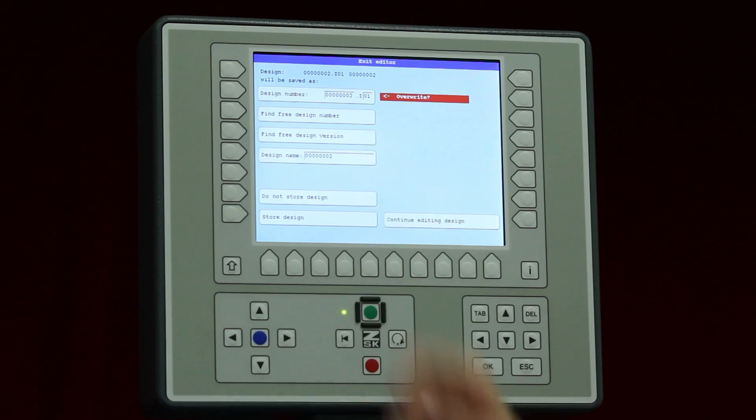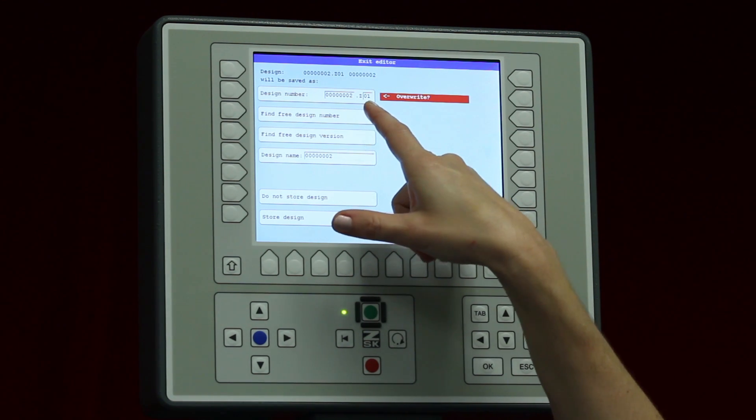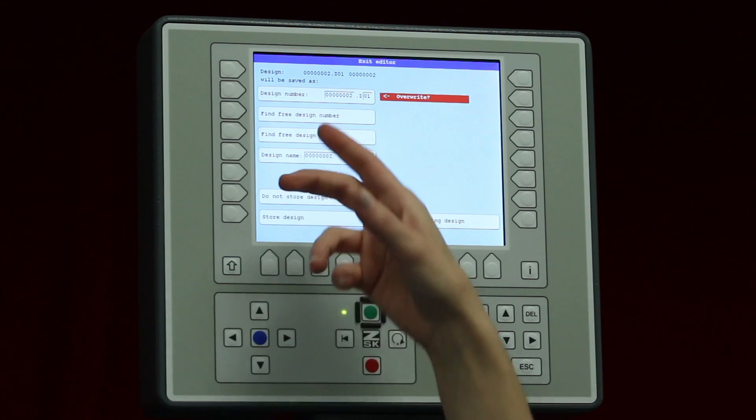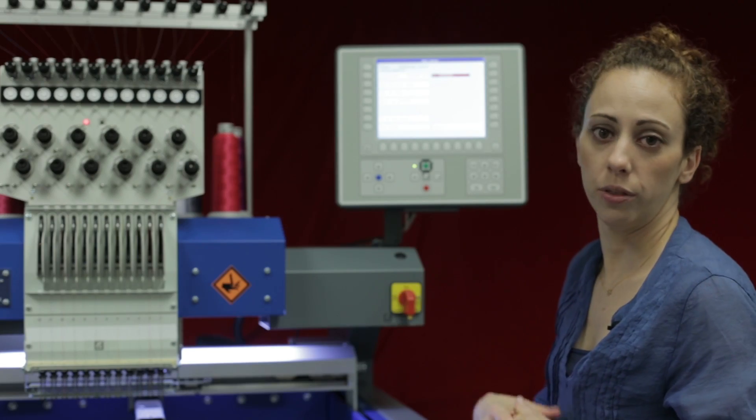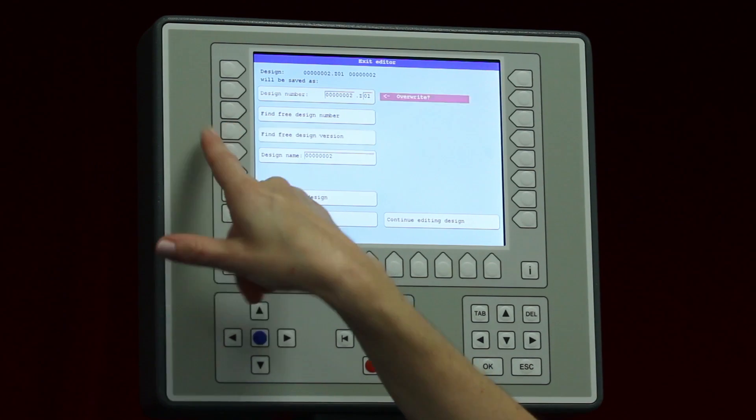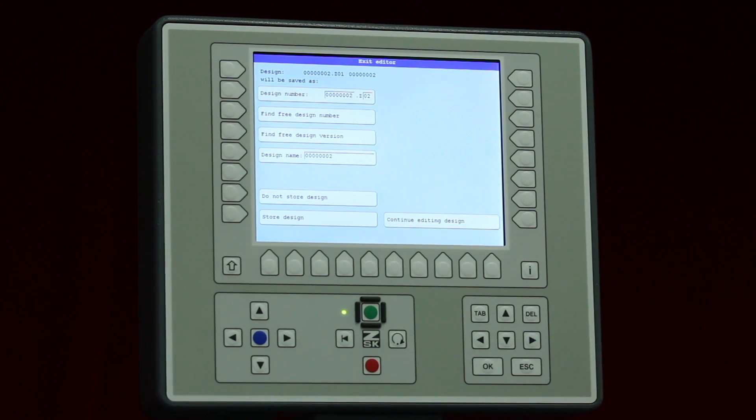If I'd like to find a free design number or a new slot I can certainly select this. If I want to find a free design version, meaning that this will change from Z01 to something like Z02 or Z03, which is a different version but the design number is the same. So let's say I'm doing this one for a cap. I'm going to do free design version and you can see it's got Z02.